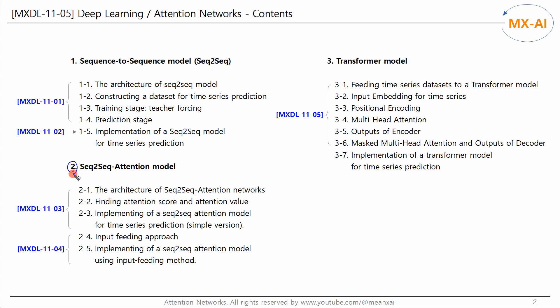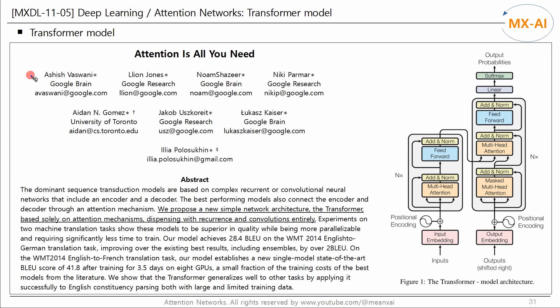In the previous chapter, we looked at a sequence-to-sequence-based attention model. In this video, we'll look at a Transformer model that uses only attention rather than a sequence model. Eight data scientists working at Google published a groundbreaking research paper in natural language processing in 2017 called "Attention is All You Need." This is the Transformer model.